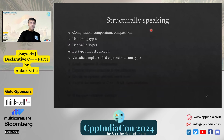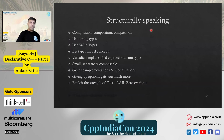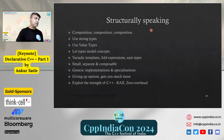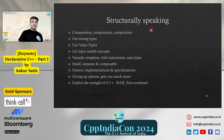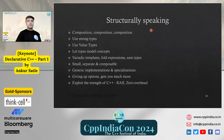To summarize structurally: composition, composition, composition is what we did. Use strong types, use value types, let types model concepts, use variadic templates and fold expressions, and sum types. Small, separate, composable things let you do bigger things with a many-fold increase in the possibilities of handling things generally. General implementations with specializations give you options — sometimes giving up options gets you much more.